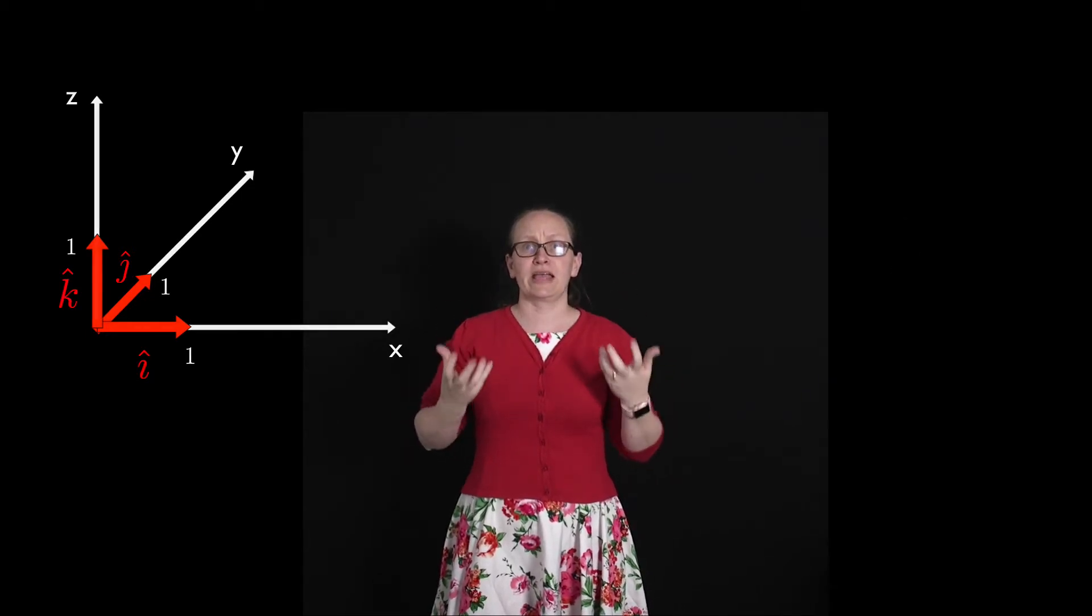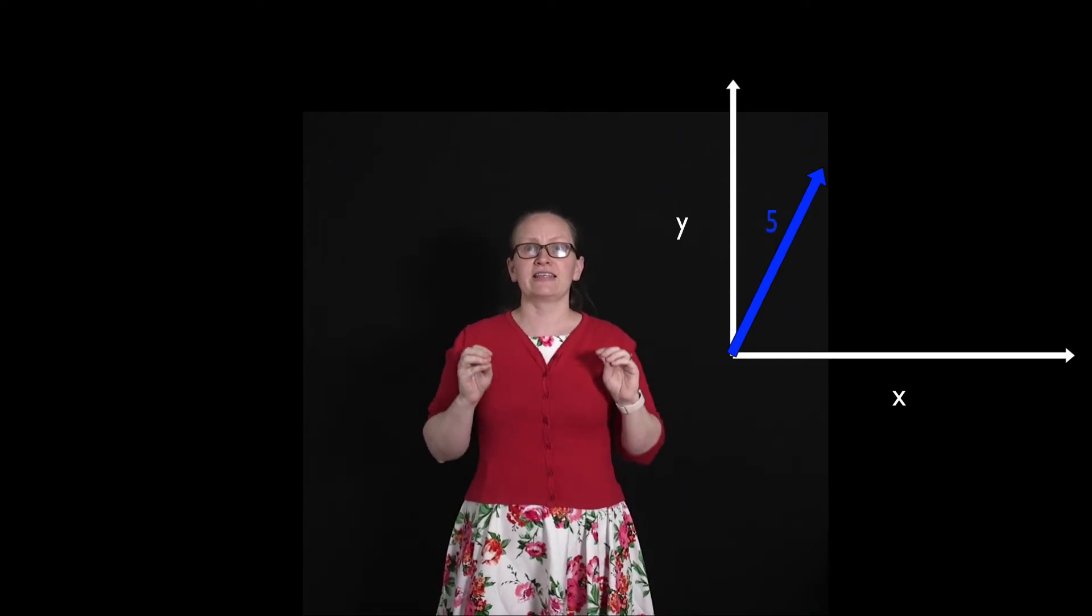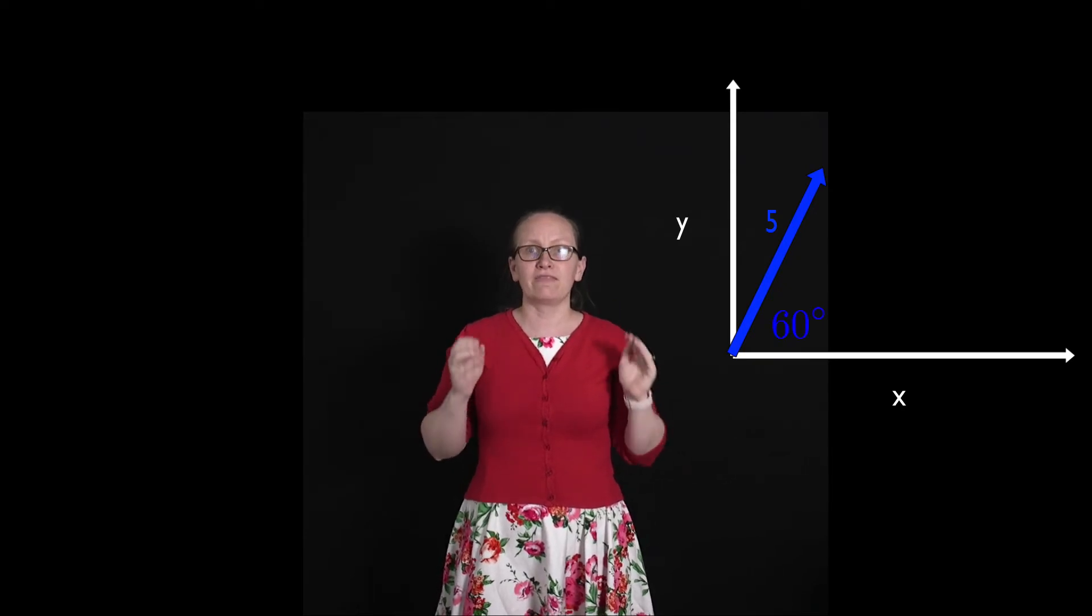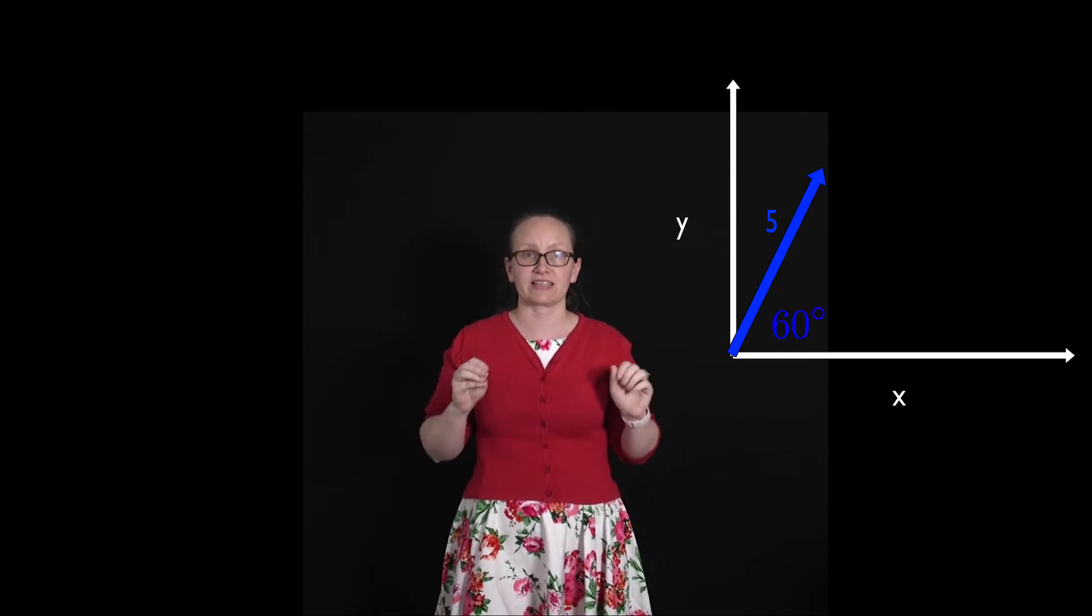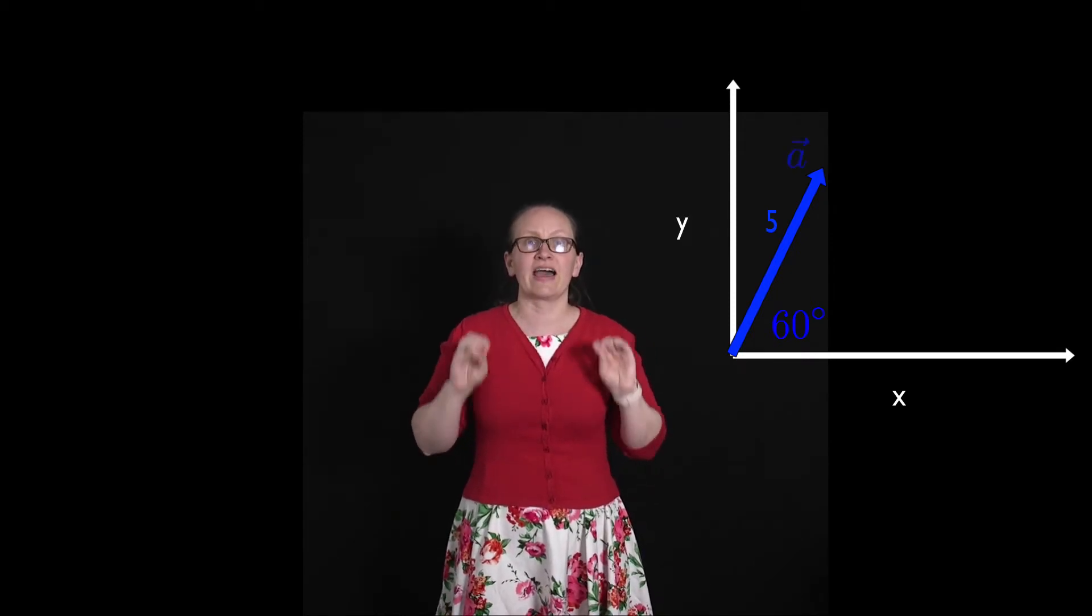Now you're going to need to be able to convert vectors from a description into unit vector notation. To do that you're going to need to make use of trigonometry. So let's consider a vector in the x, y plane, which has a magnitude of 5 and it's at an angle of 60 degrees above the positive x axis. So you can see it drawn in the figure here. We're calling our vector a.